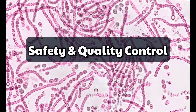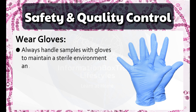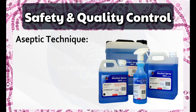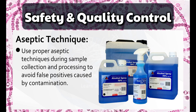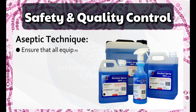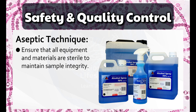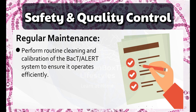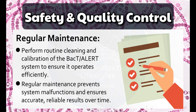Safety and Quality Control. Wear Gloves: Always handle samples with gloves to maintain a sterile environment and prevent contamination, reducing the risk of introducing external microorganisms that could affect results. Aseptic Technique: Use proper aseptic techniques during sample collection and processing to avoid false positives caused by contamination, and ensure all equipment and materials are sterile to maintain sample integrity. Regular Maintenance: Perform routine cleaning and calibration of the BactiAlert system to ensure it operates efficiently; regular maintenance prevents malfunctions and ensures accurate, reliable results over time.